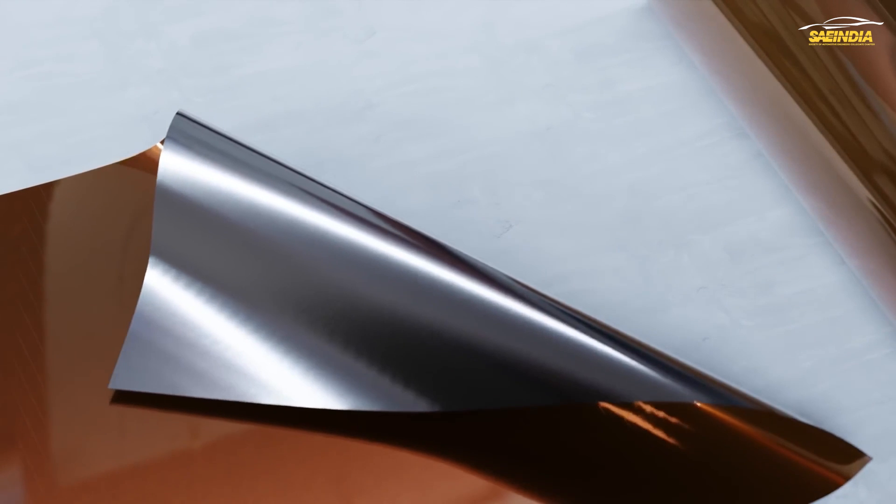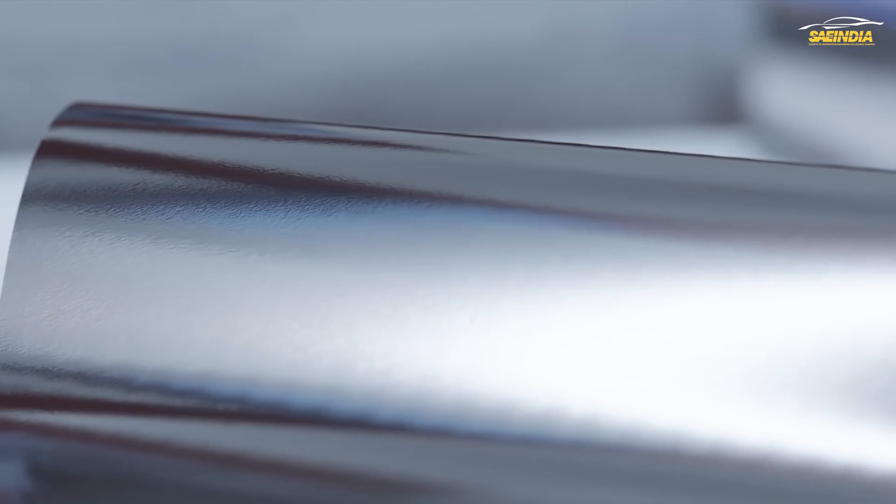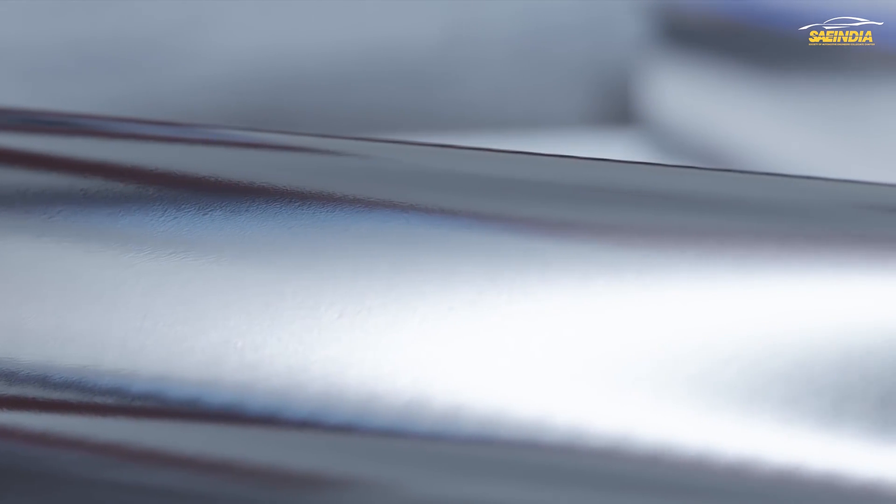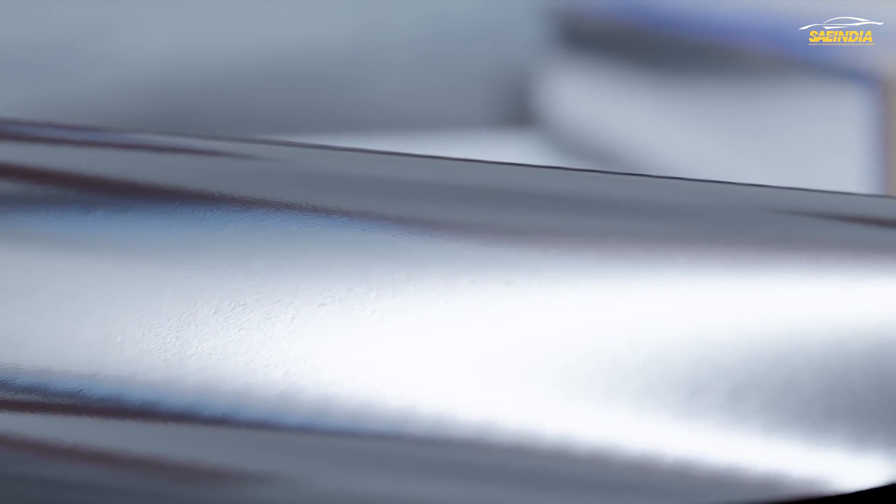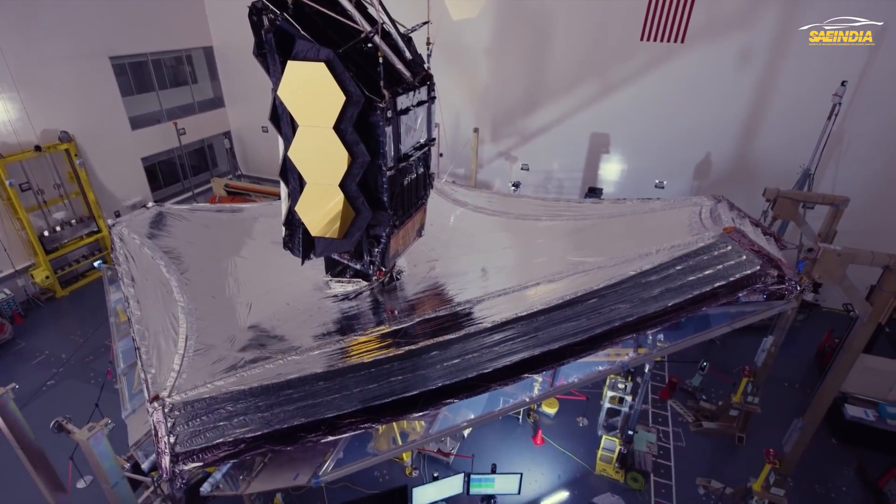The probability of micrometeorites to hit the sun shield is quite high, which can tear the sun shield. To prevent this, ribbed stops have been molded in the sun shield to arrest the tears.